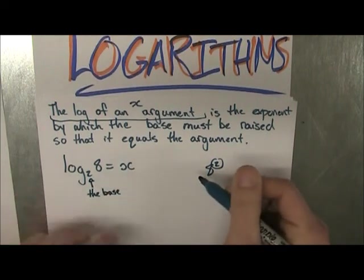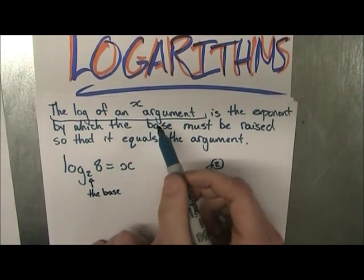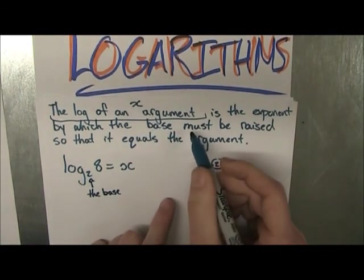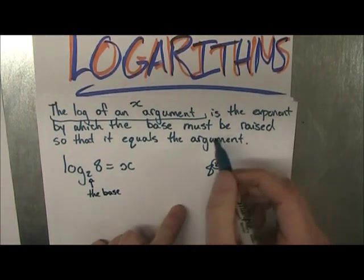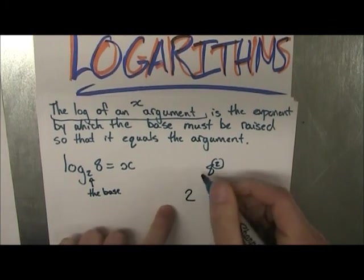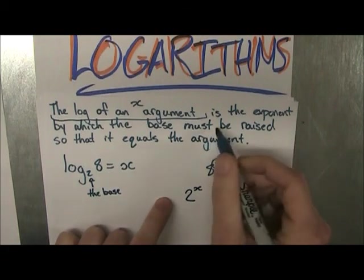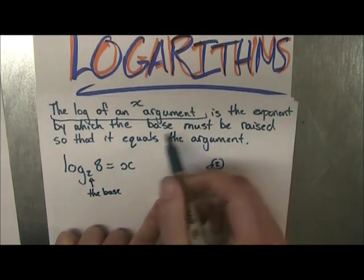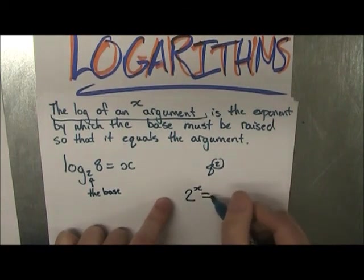Okay, so basically what this is saying is that the log of an argument, so the answer to our log is the exponent by which the base must be raised. So we know our base is raised to an exponent x, and it must be raised so that it equals the argument.